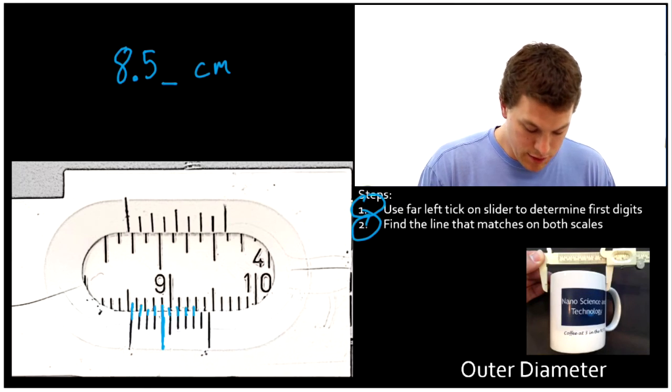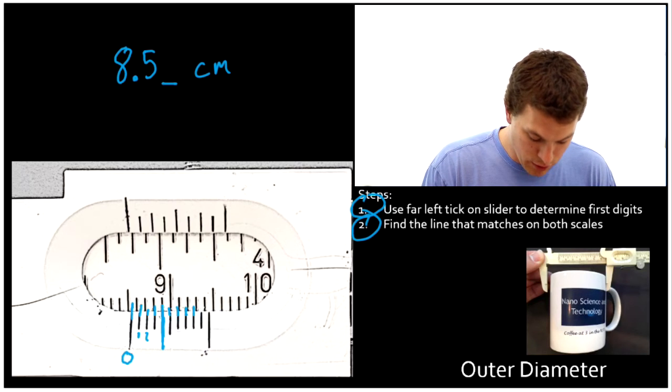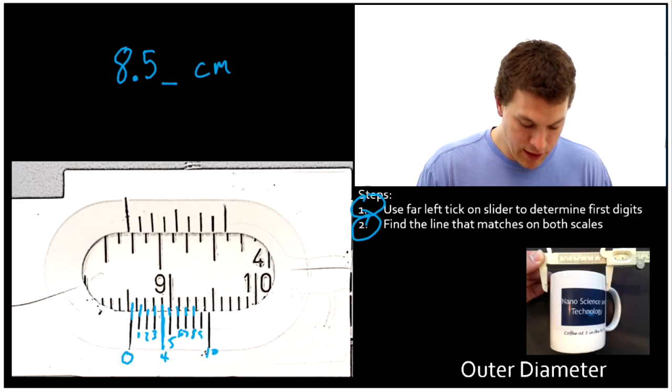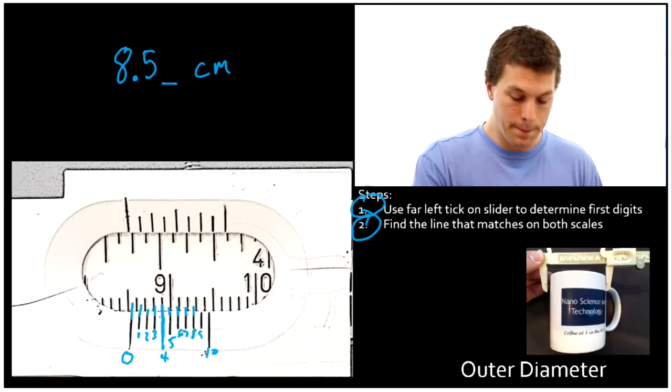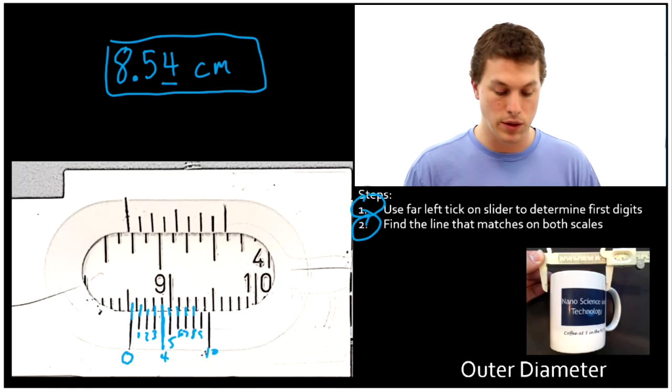Now we're going to number them. So the numbers on the vernier scale go 0, 1, 2, 3, 4, 5, 6, 7, 8, 9, and then finally 10. Since our fourth one lines up, we're going to write a four right there. So our measurement is 8.54 centimeters.